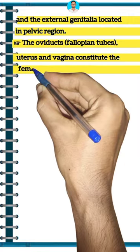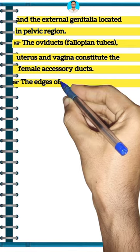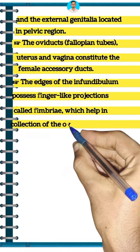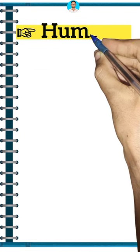uterus and vagina constitute the female accessory ducts. The edges of the infundibulum possess finger-like projections called fimbriae which help in collection of the ovum after ovulation. Human reproduction part 3,